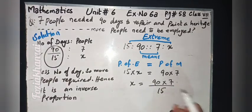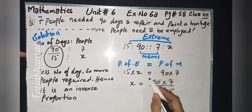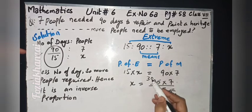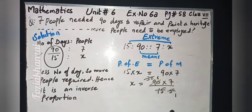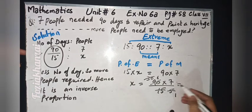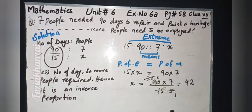Now simplify: X = 90 × 7 / 15. Taking the table of 3: 15 divided by 3 is 5, and 90 divided by 3 is 30. After reducing, we get 6 × 7 which equals 42. So X equals 42.